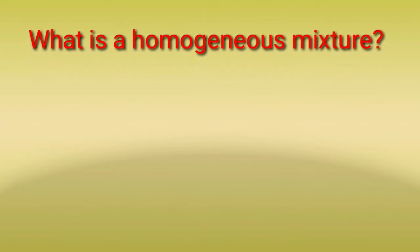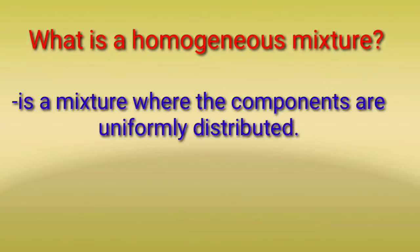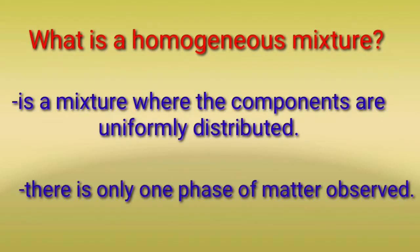What is a homogeneous mixture? It is a mixture where the components are uniformly distributed and there is only one phase of matter observed.